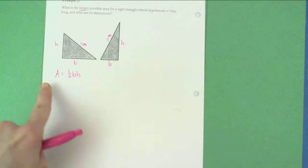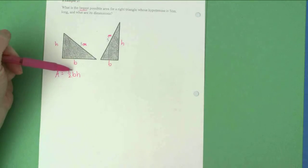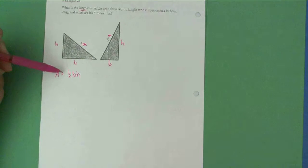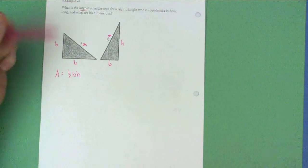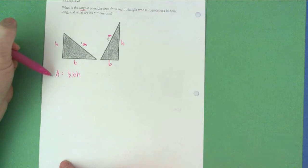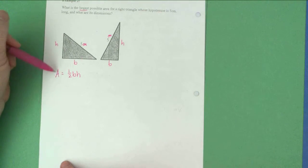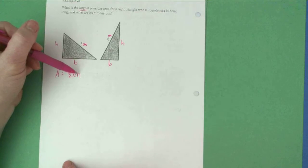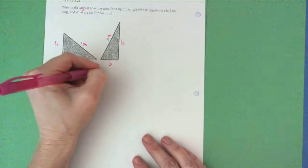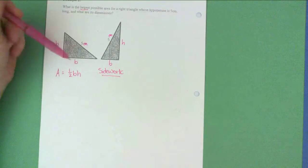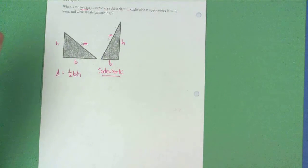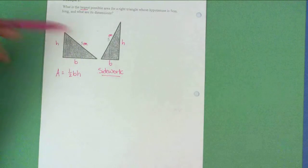What's hard about this is we can't take a derivative right here because we have two different variables. When we take A prime, the derivative of A, we do it with respect to b or with respect to h. So my side work before I get started is actually going to be creating a relationship between b and h so that I can solve for one variable in terms of the other. The simplest way to do that is going to be the Pythagorean theorem.